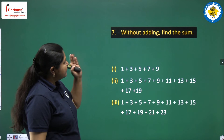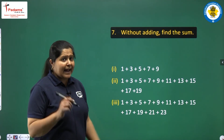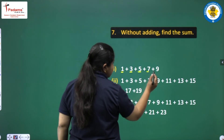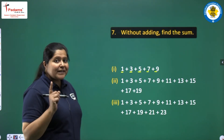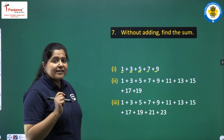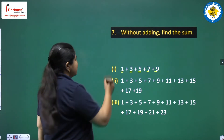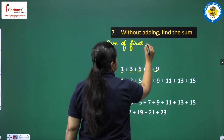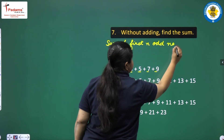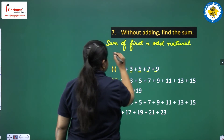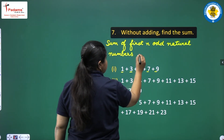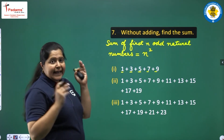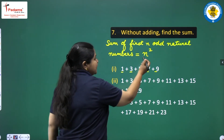Question 7: without adding, find the sum. We are given some numbers and we have to find the sum without adding. The numbers given are 1, 3, 5, 7, 9 — these are odd numbers. We know a property: the sum of the first n odd natural numbers is equal to n squared.